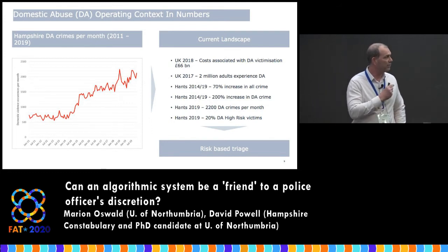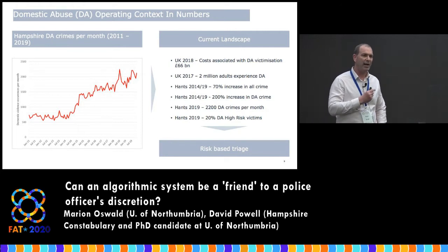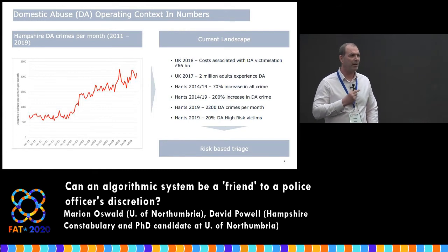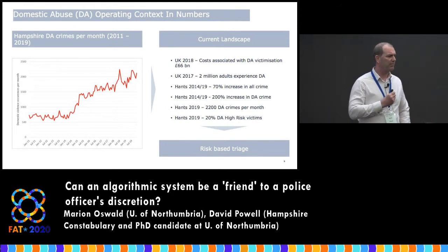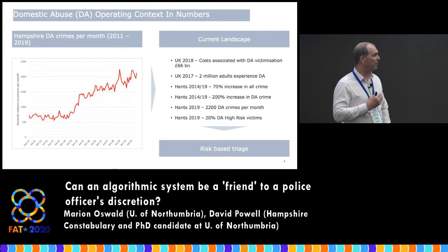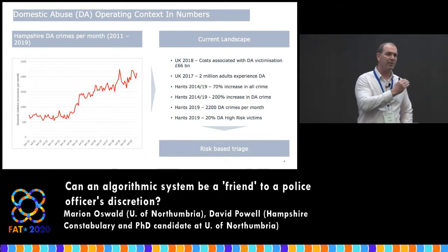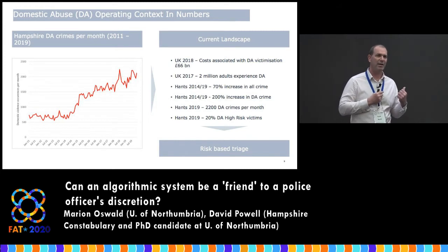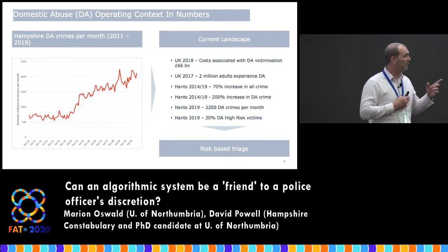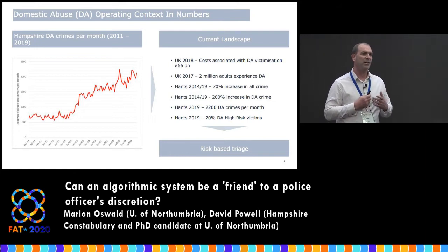Since 2014 Hampshire has had a 70% increase in all crime, with a strategic shift from traditional crimes like burglary and robbery toward hidden crime and vulnerability. In domestic abuse, the rate of rise is much higher than all crime. Within that, 20% — sometimes more — of cases are high-risk. Resources are finite, and the only way to organise ourselves is through risk-based triage. Domestic abuse is one of the very few areas in law enforcement where the entire response is driven by a risk assessment.